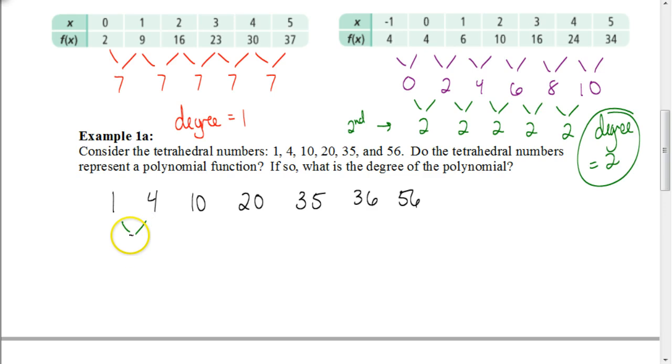So 4 minus 1 is 3, 10 minus 4 is 6, this difference is 20, this will be 15, and this difference between 35 and 56 will be 21. Obviously, again, we don't have a same set of numbers there, so we're going to have to find the next set of differences.